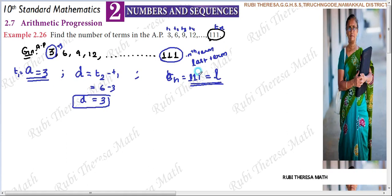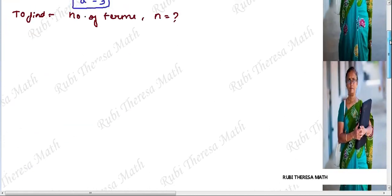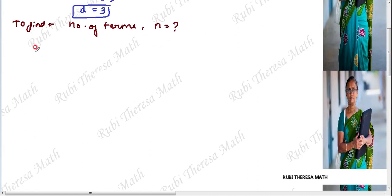So what we need to find is: which term is 111? Is it the 11th term, 12th term, or 20th term? We call it as the general term, the nth term Tn, or you can write it as l, the last term. Now we need to find n, the total number of terms. Using the formula: n equals last term minus first term, divided by the common difference, plus 1. That is the formula. For the derivation, you can refer to the previous video.